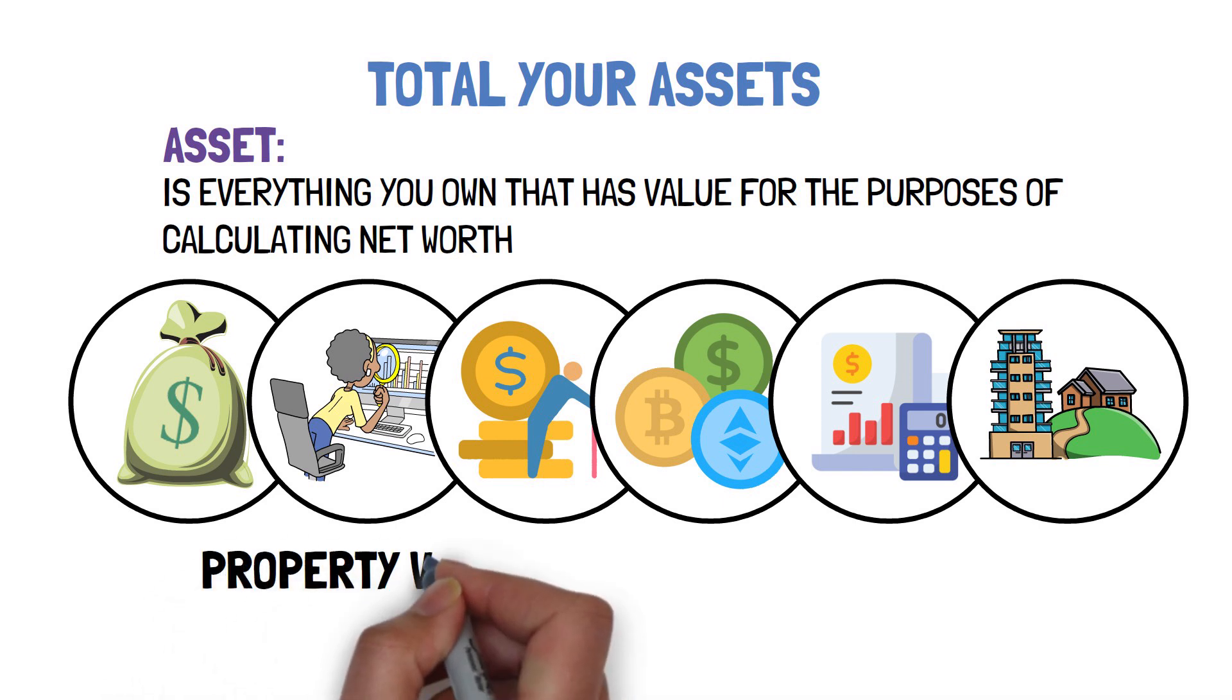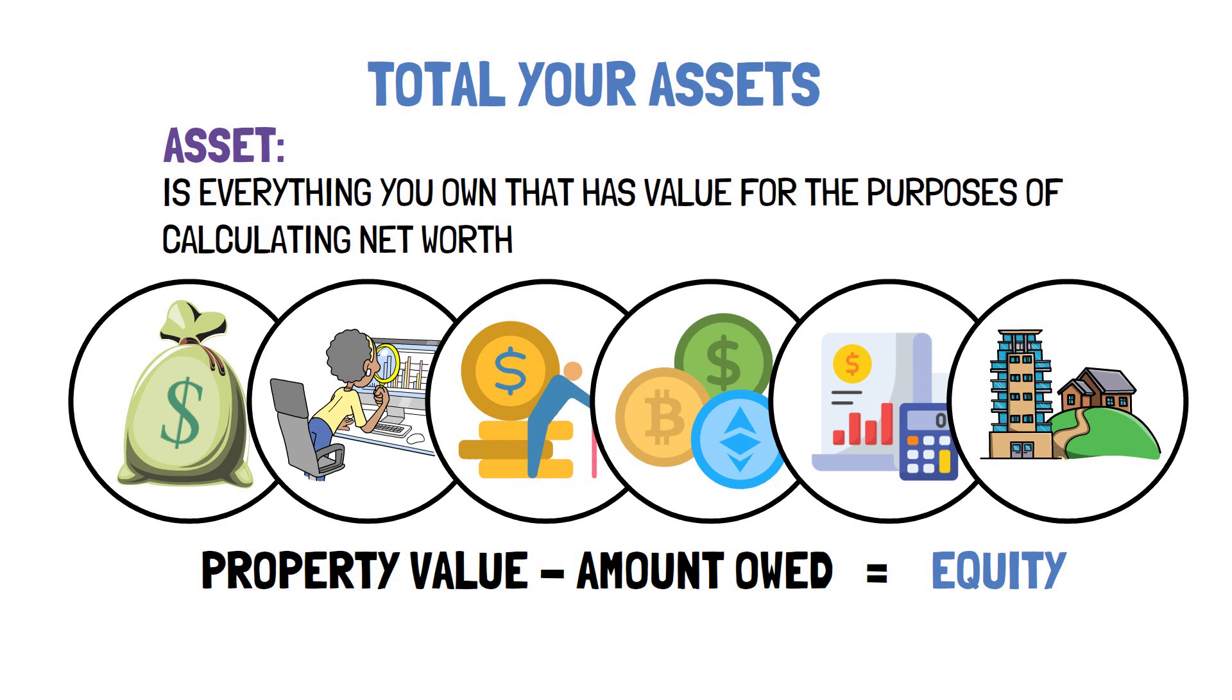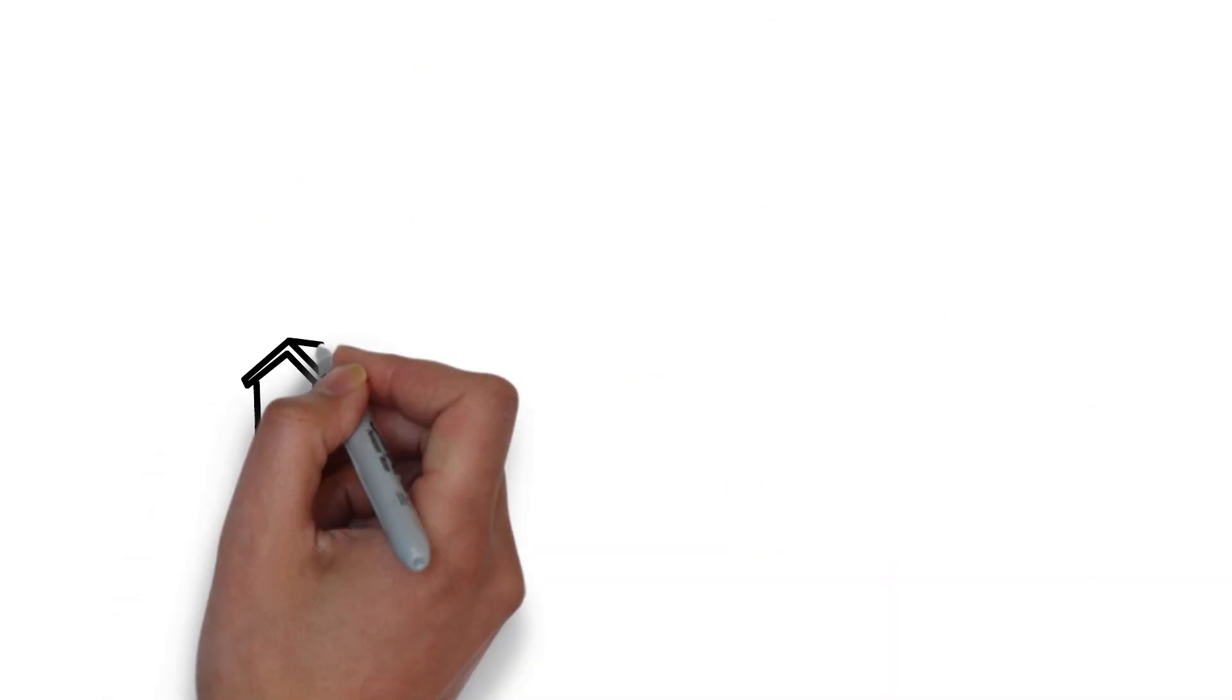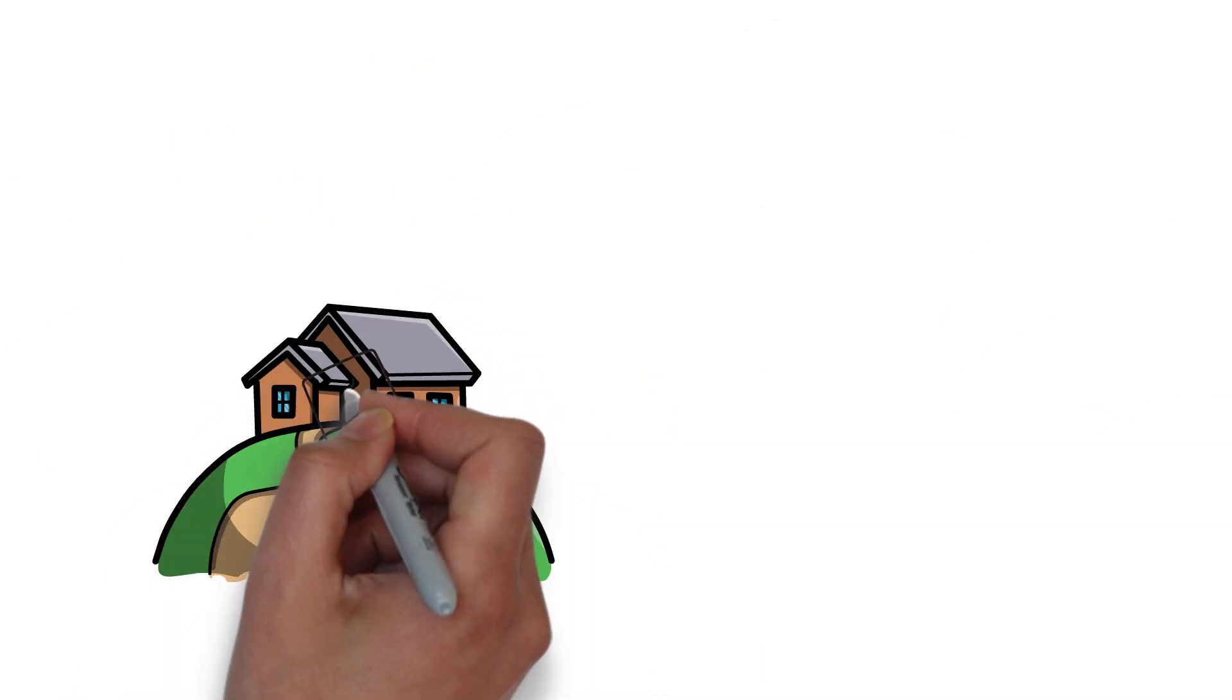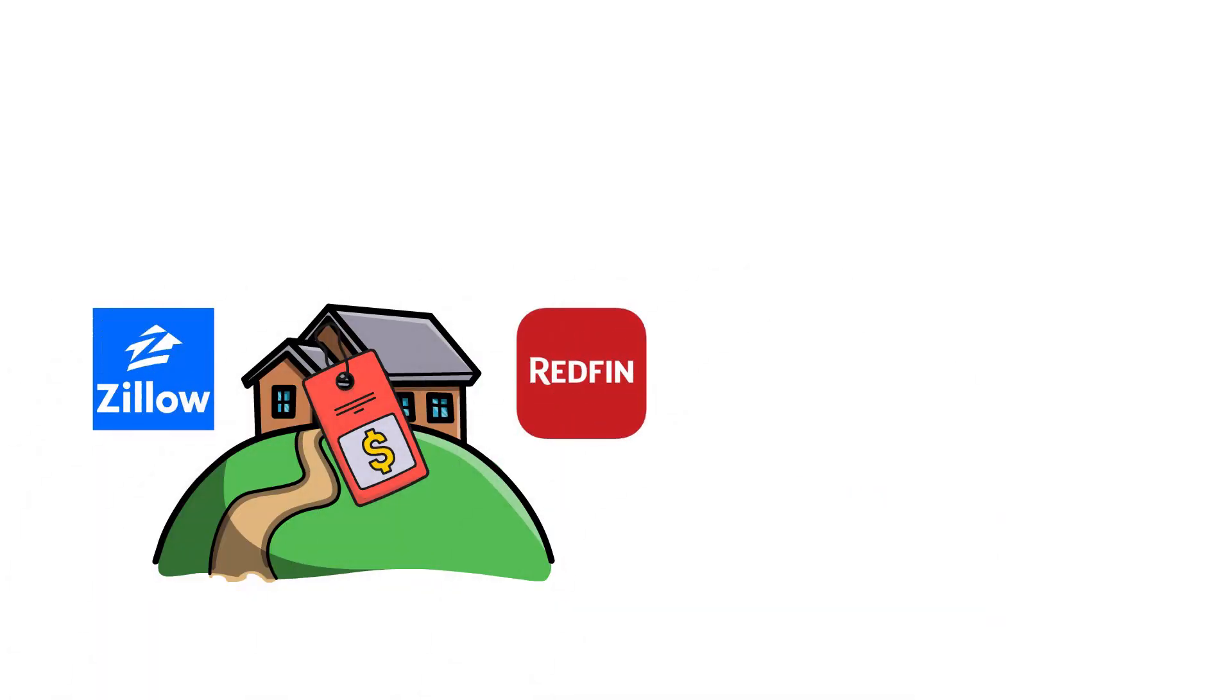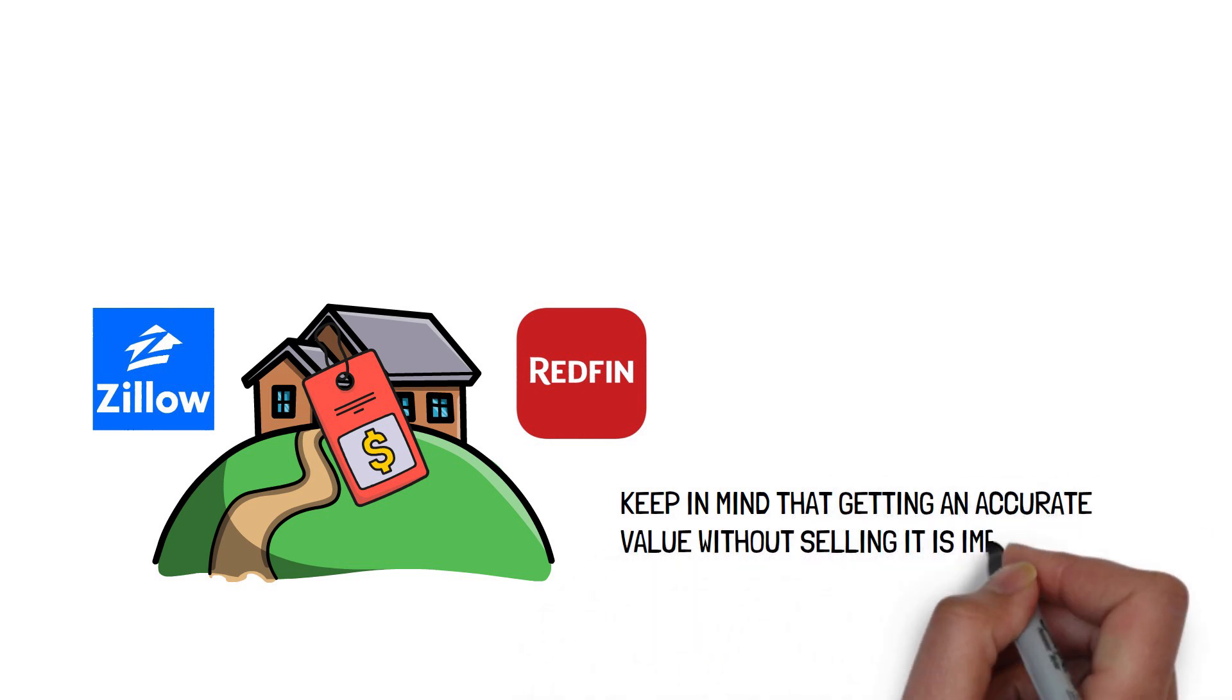Subtract the amount owed on the property from its value to calculate your equity. If your house is worth $400,000 but you owe $300,000, your equity is $100,000. You can acquire a general estimate of your home's value by using a site like Zillow or Redfin. Use similar property sales in your neighborhood even better. Keep in mind that getting an accurate value without selling it is impossible.